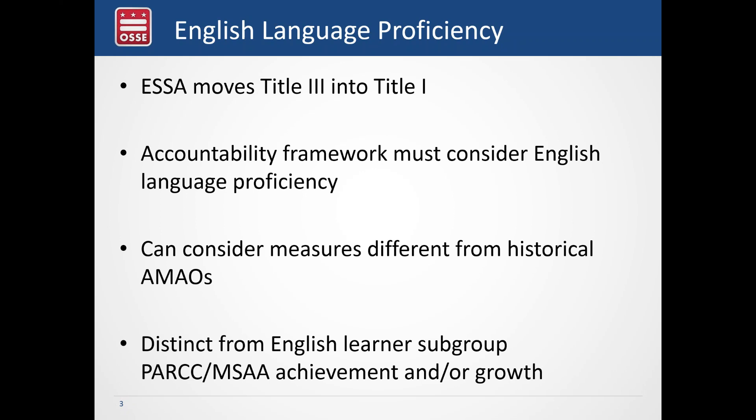The way we do that can be different than what has been done previously. Historically there was something called Annual Measurable Achievement Objectives, or AMAOs, which is what states use to gauge the extent to which students were learning English. Under ESSA we have an opportunity to look at that metric differently — it's exciting but also uncharted territory, since AMAOs were not subject to ESEA waivers and states have been using the same metric for a very long time.